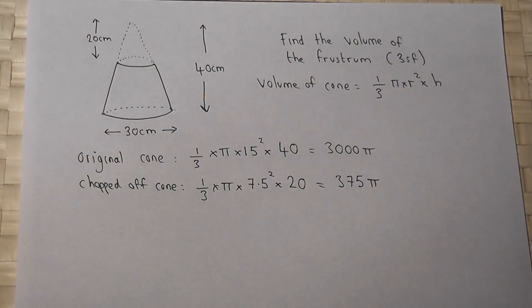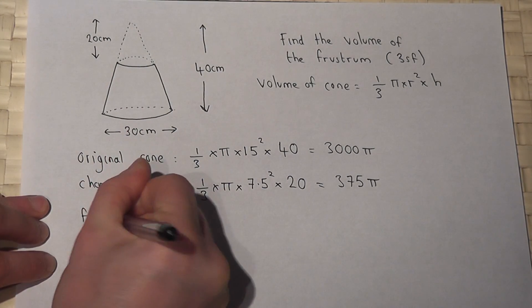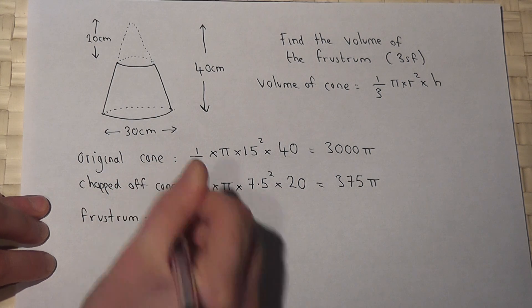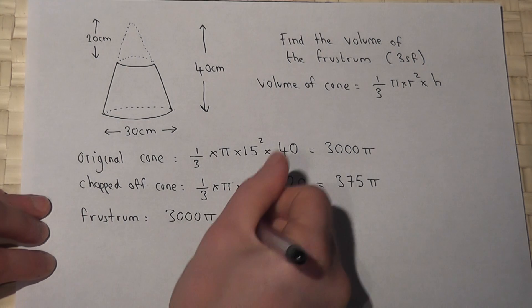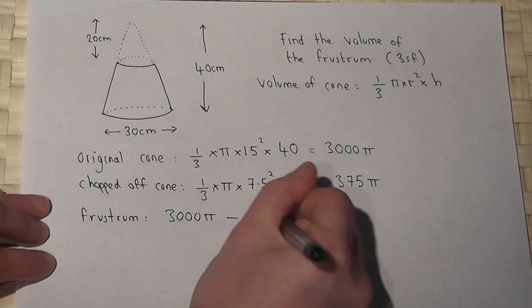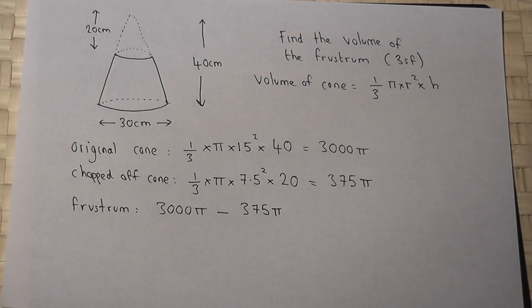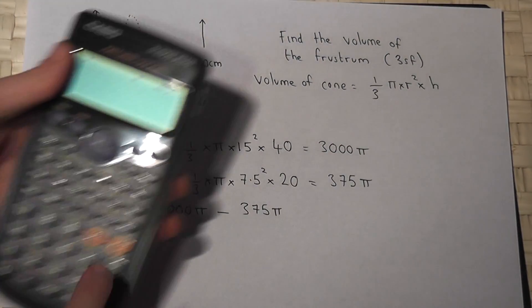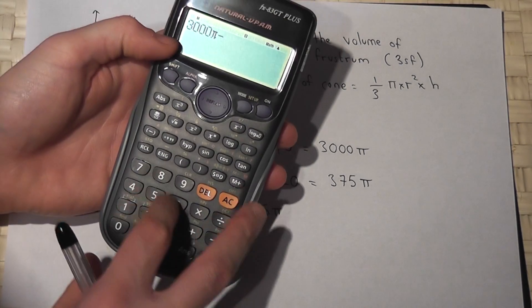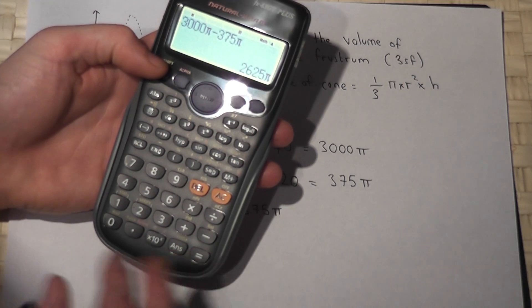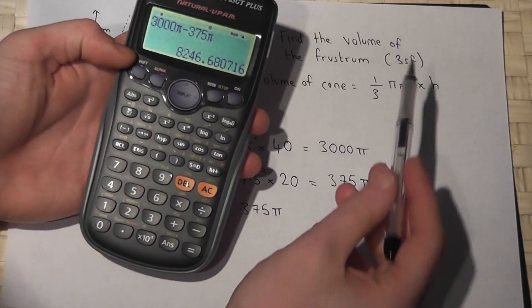So to find the remaining volume, the frustum will be the total volume of the original cone minus the bit that was chopped off. So if we want this as a decimal to 3 significant figures, 3000 pi take away 375 pi is 2625 pi. Press the button there to 3 significant figures.